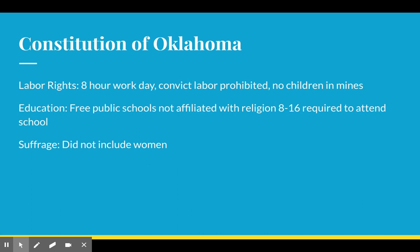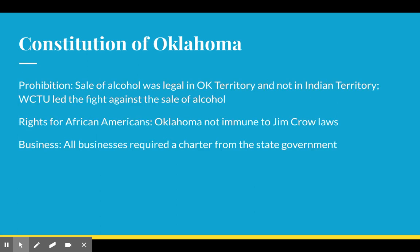And that's going to create tension that we're going to see next week when we discuss the 1921 race massacre in Tulsa. The sale of alcohol was legal in Oklahoma Territory but not in Indian Territory, and so there is prohibition written into the constitution of Oklahoma. Oklahoma has been very conservative with the sale and consumption of alcohol throughout its history.